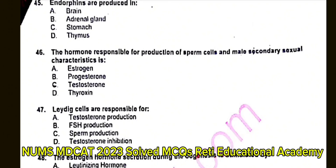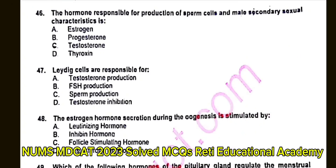Question number 47: The estrogen hormone secretion during oogenesis is stimulated by? A. Luteinizing hormone. B. Testosterone hormone. C. Follicle stimulating hormone. D. Inhibin hormone. The correct answer is C: Follicle stimulating hormone.